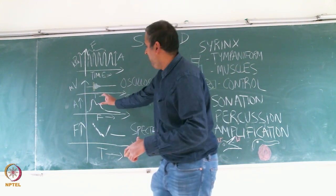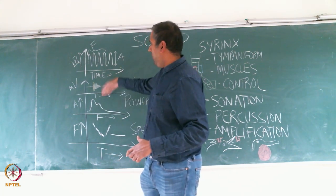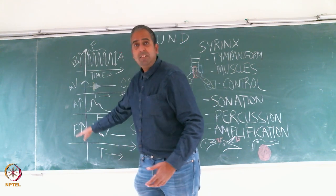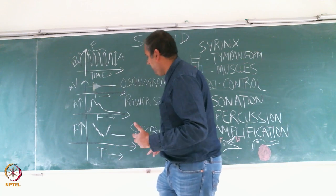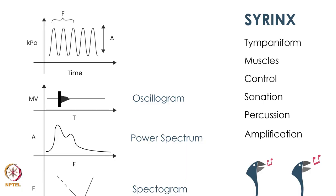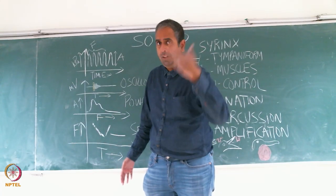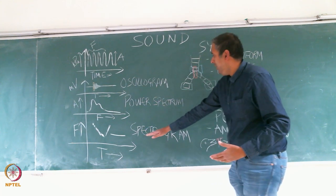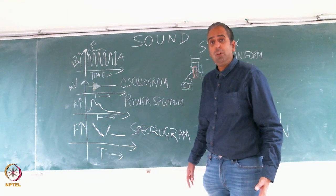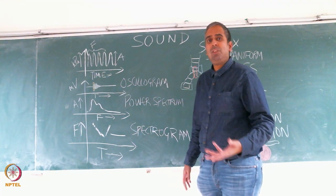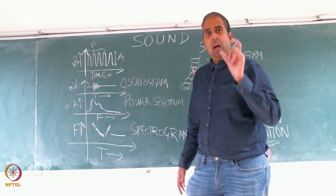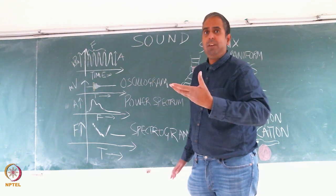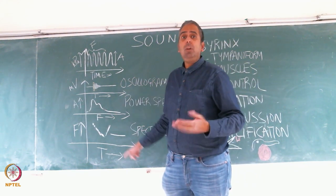Now let's take that power spectrum. Take many of these for each window — many different power spectra and put them all together. What you get is frequency on the y-axis, time on the x-axis, so you get frequency, time, and amplitude all on one plot. This plot is referred to as a spectrogram. You will find these often called sonograms — the terms are used interchangeably. Sonogram refers specifically to a sound, but the correct engineering term is spectrogram, because any signal can be represented as a spectrogram, not just a sound.